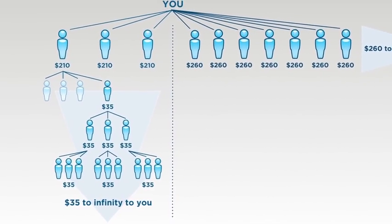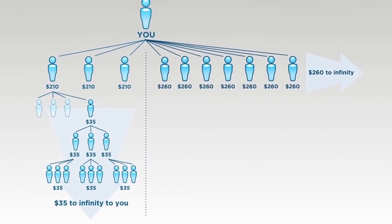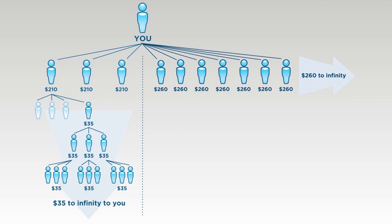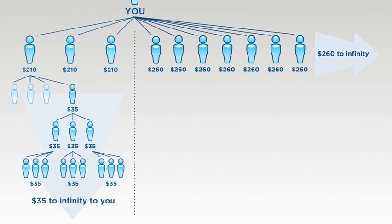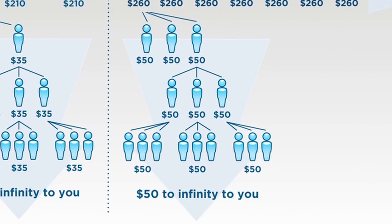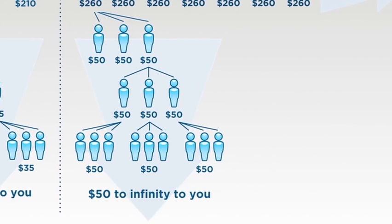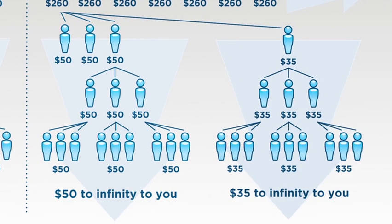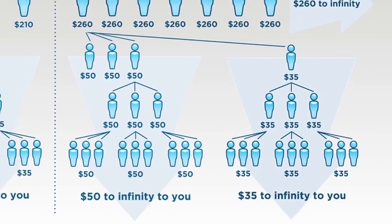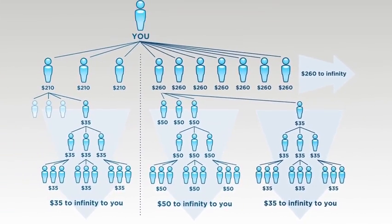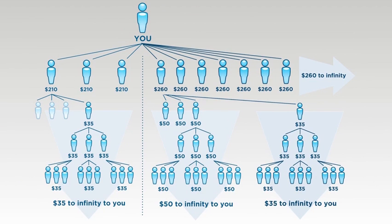Now from your fourth person on, whenever you help them enroll their first three people and help them duplicate and enroll three who enroll three who enroll three, we're going to pay you $50 on that column of people from your fourth personal on. Just like before, when you help that individual enroll his or her fourth person, we're going to pay you an additional $35 infinitely deep as they duplicate what you've done. So you can see the income potential here is dramatic and it really rewards duplication of Vantage Packs.